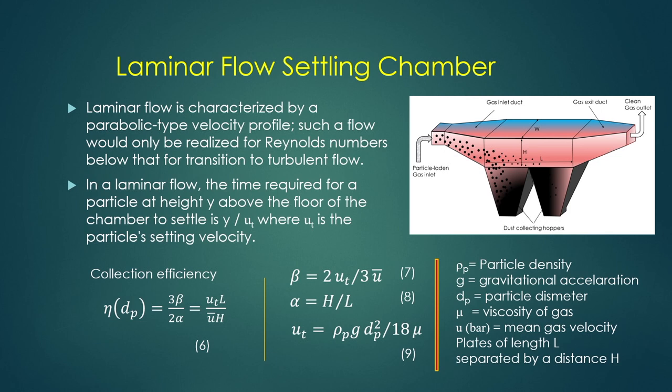For laminar flow settling chamber, the particle flows with a velocity profile that is almost parabolic. Such flow is only realized when the Reynolds number is below that for transition to turbulent flow. In the case of laminar flow, the time required for a particle at height y above the floor of the chamber to settle is y/ut.